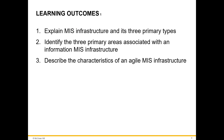The main learning outcomes intended for this section include: one, explain MIS infrastructure and its three primary types; two, identify the three primary areas associated with an information MIS infrastructure; and three, describe the characteristics of an agile MIS infrastructure.